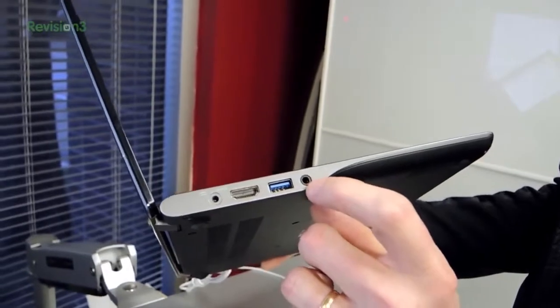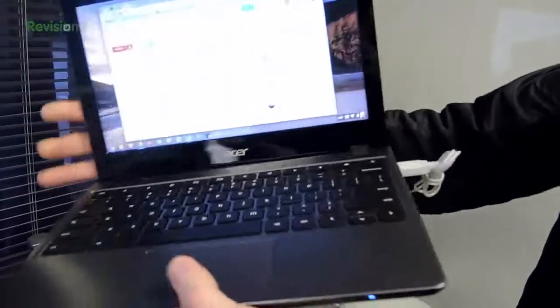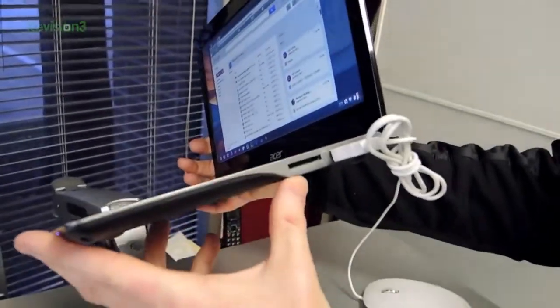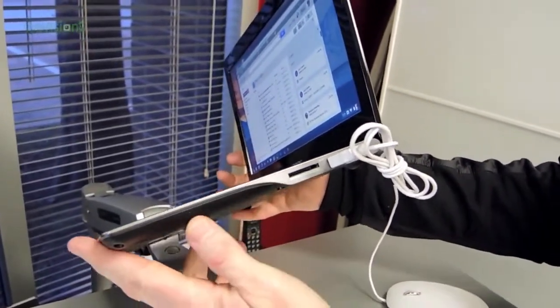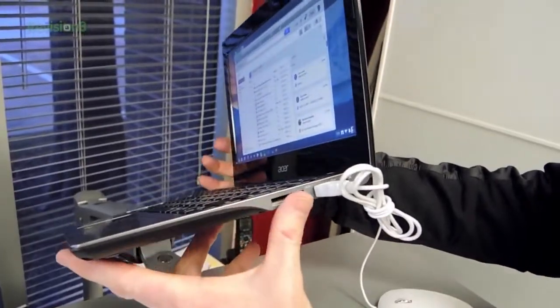It's got a microphone slash headphone jack here, so you can do conference calling and stuff. It has an SD slot, so you could use that for expanding your memory or importing pictures, and another USB over here.